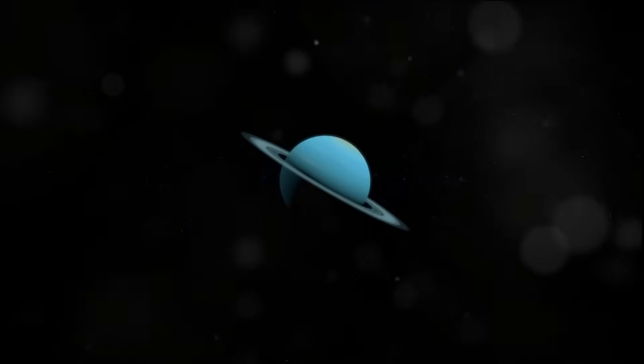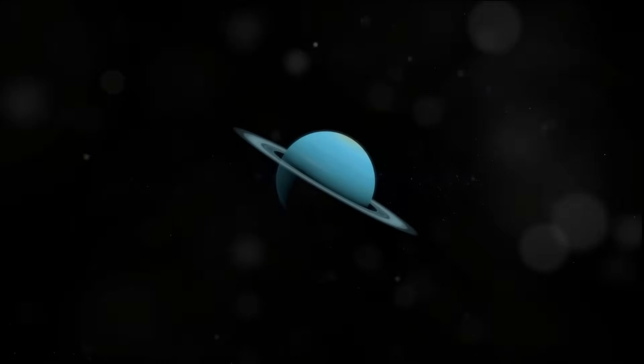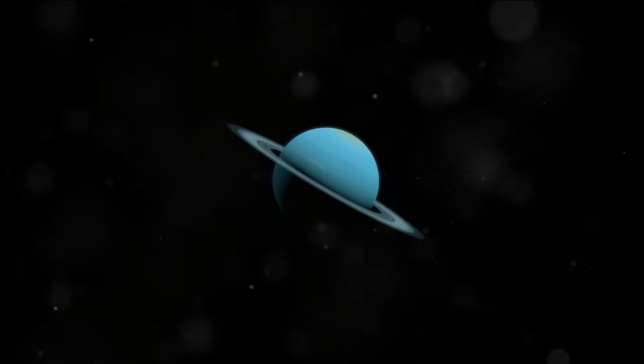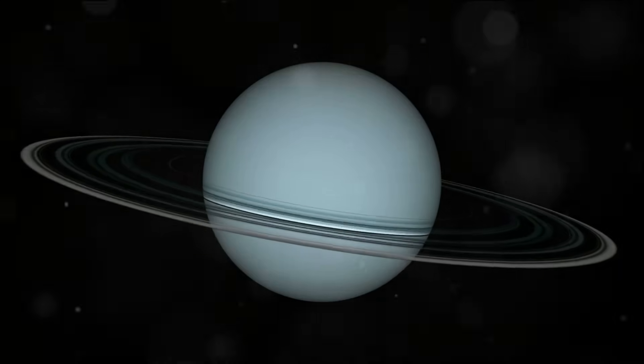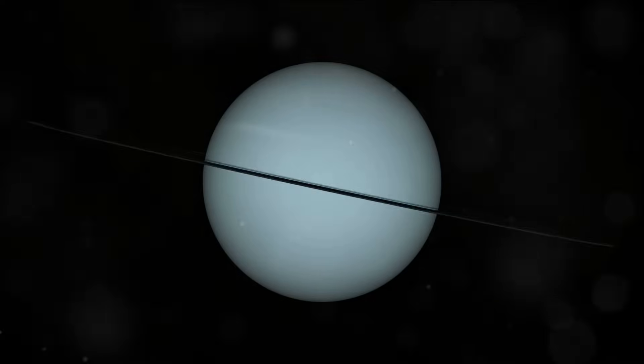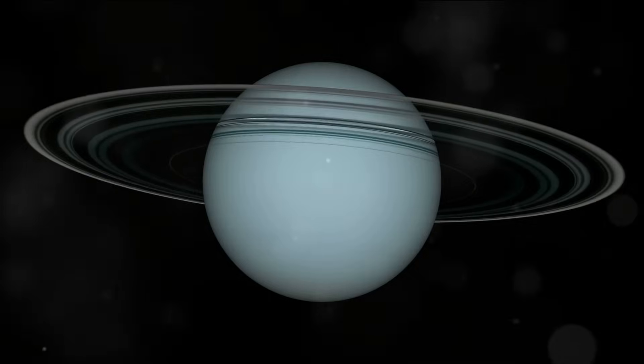First up is Uranus. Unlike its fellow planets, Uranus spins on its side with its axis almost parallel to its orbit. This unique tilt gives Uranus extreme seasons, with each lasting a whopping 21 Earth years. Imagine one season for more than two decades. Uranus is also home to a thin set of rings and a staggering 27 known moons.